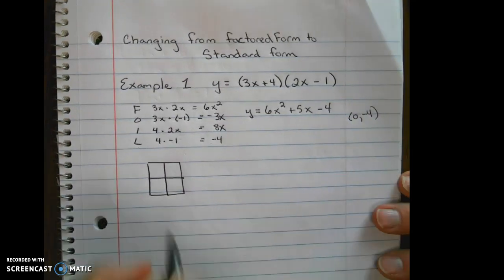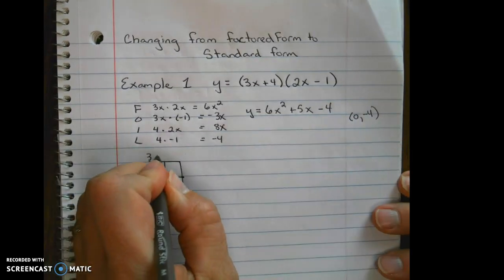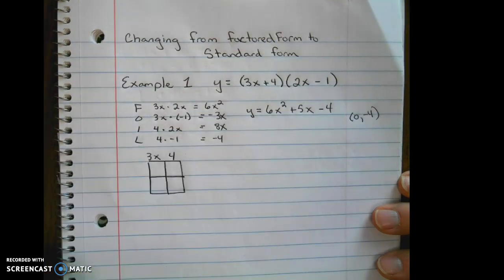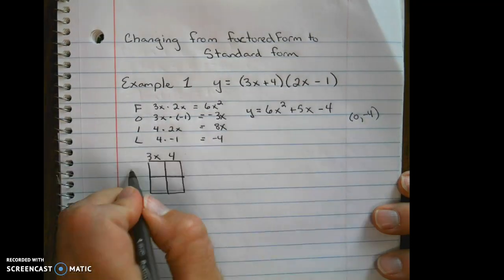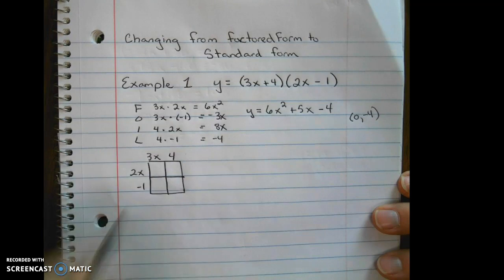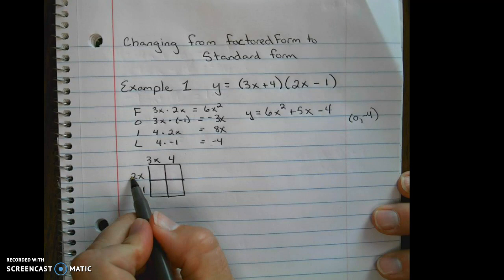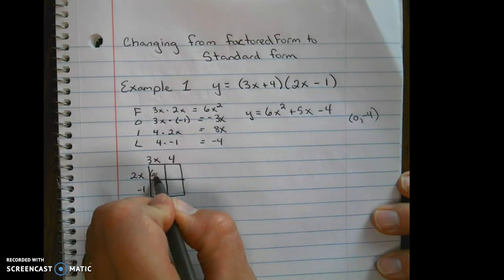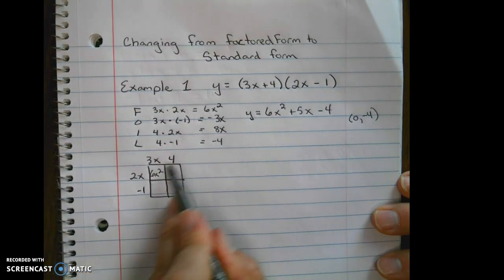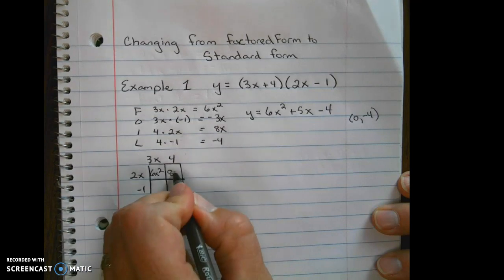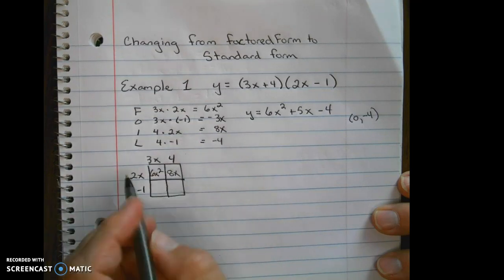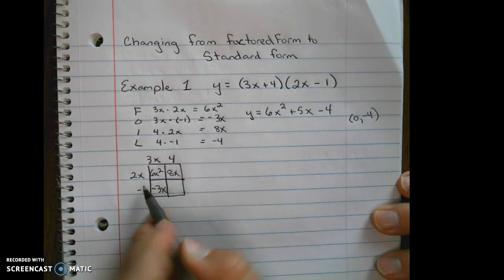Okay, box method. It's just a graphic organizing tool. So 3x plus 4 times 2x minus 1. Basically we're doing the same thing we just did, multiplying these together, these two terms, these two terms, and these two terms.